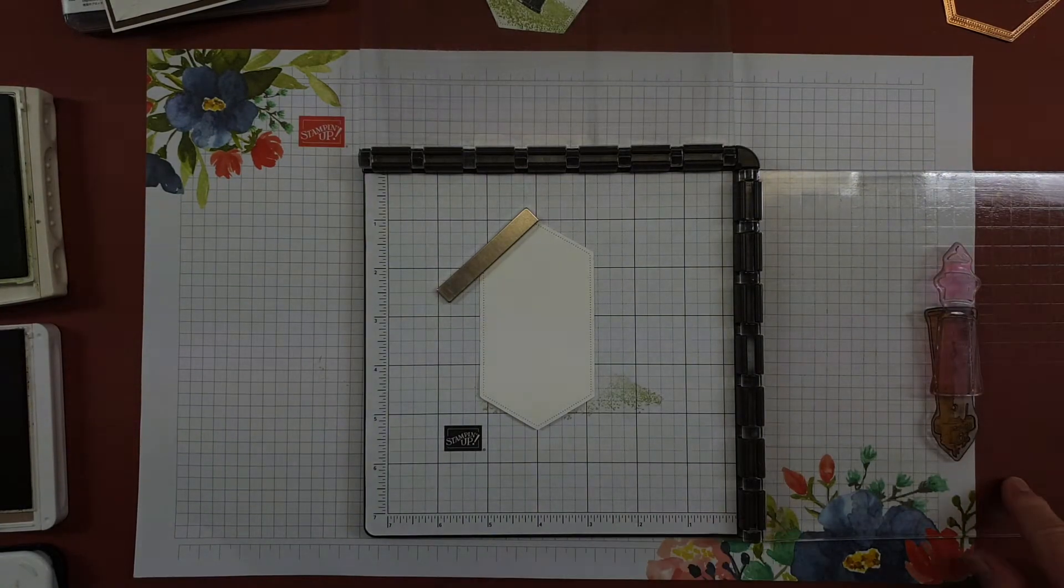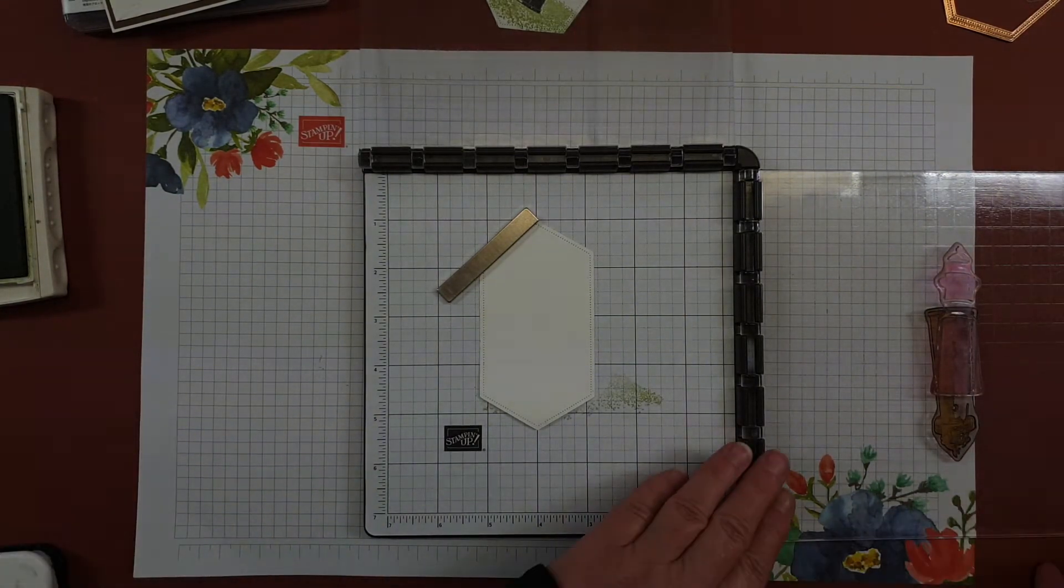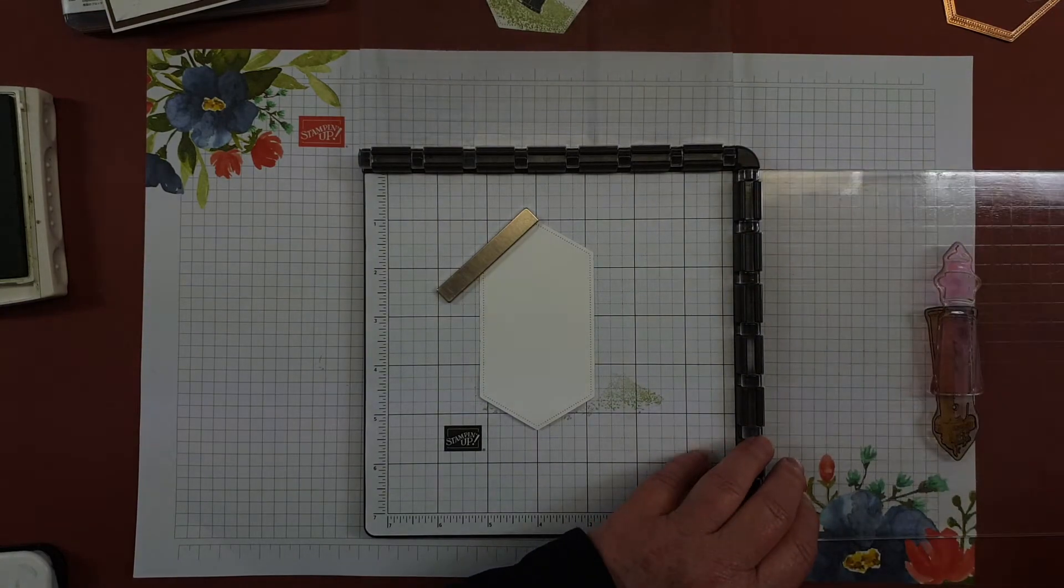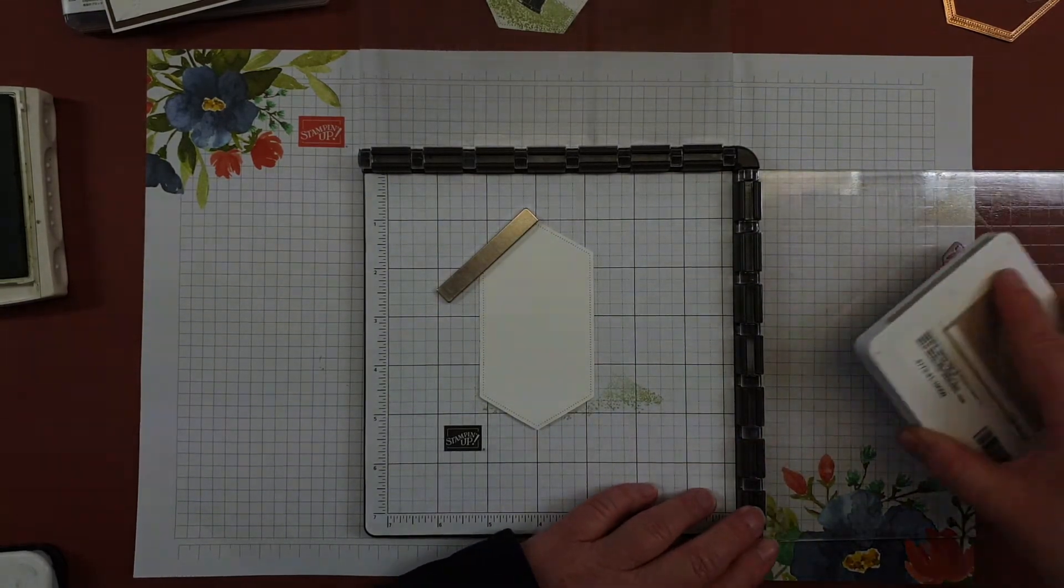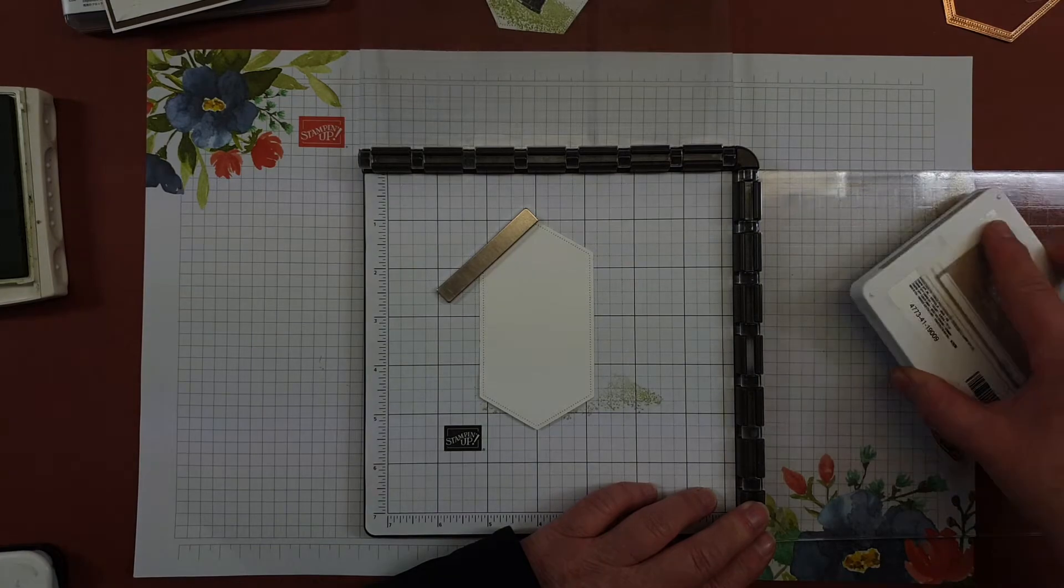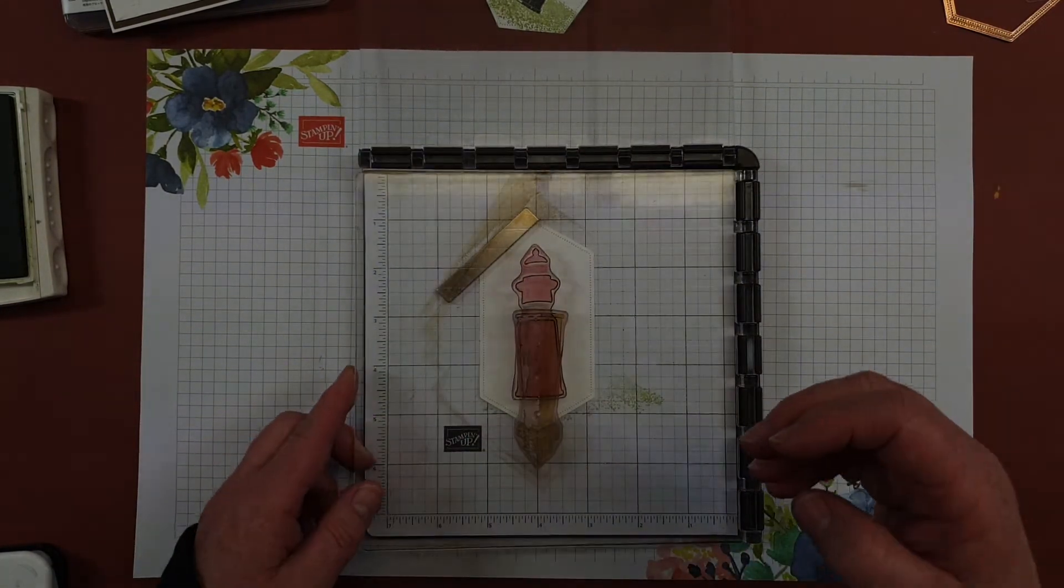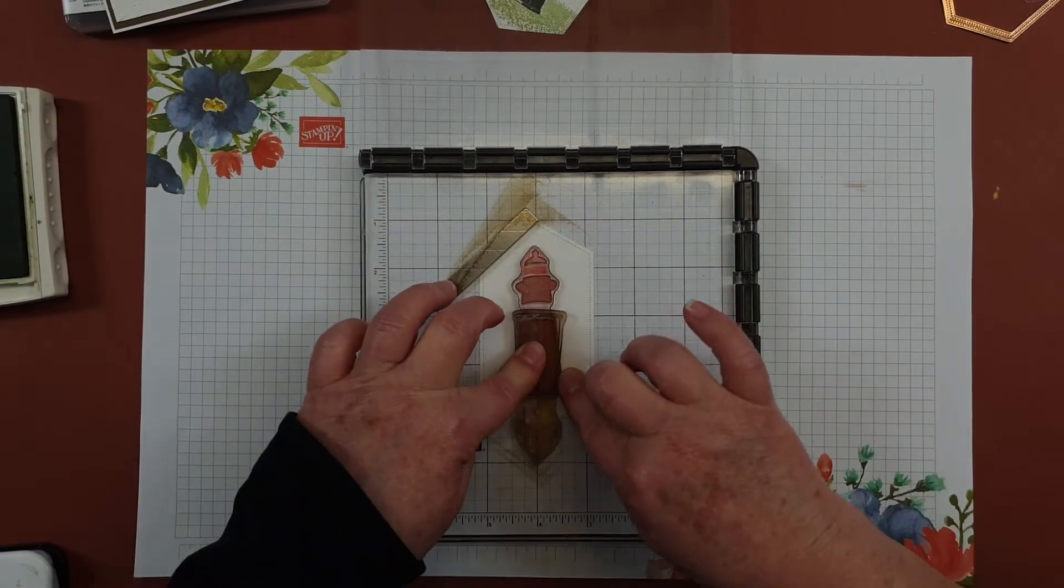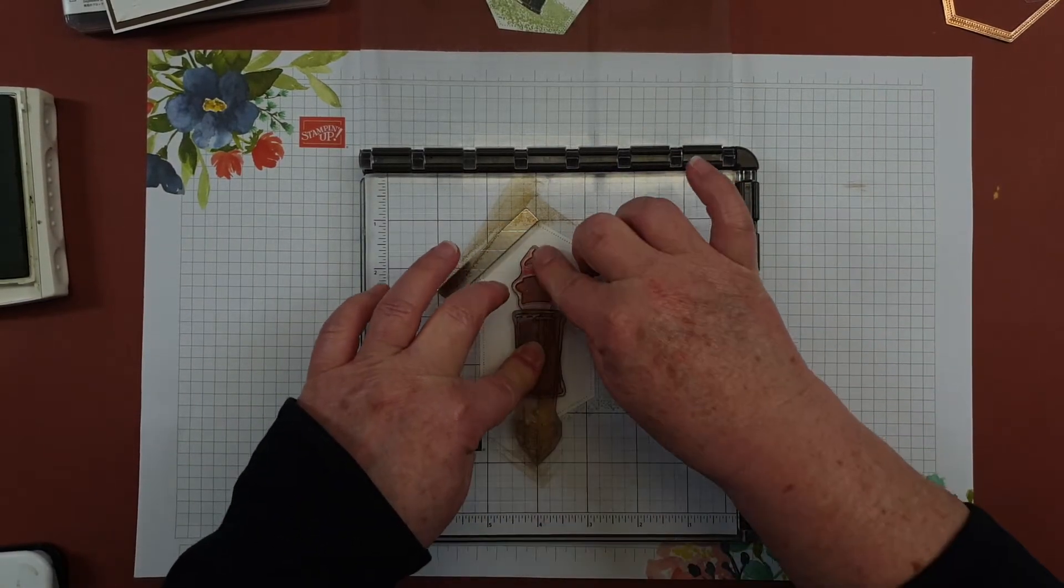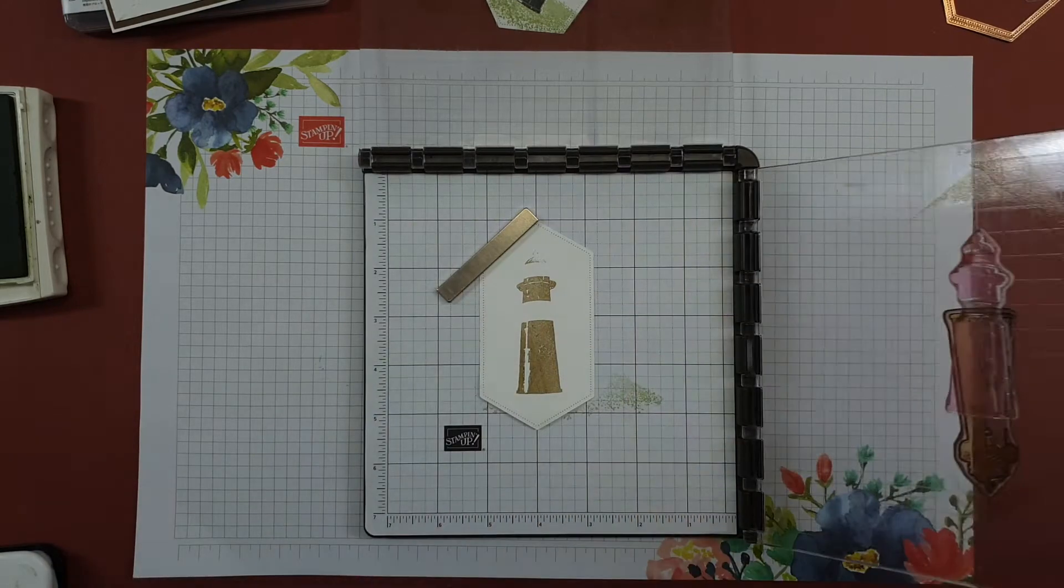I've placed images that I am using onto the different hinge of my Stamparatus. So the first layer I'm going to ink with Crumb Cake ink and press that down and lift that up.